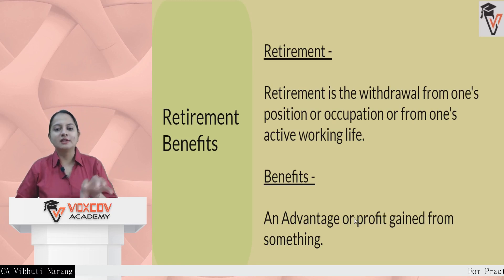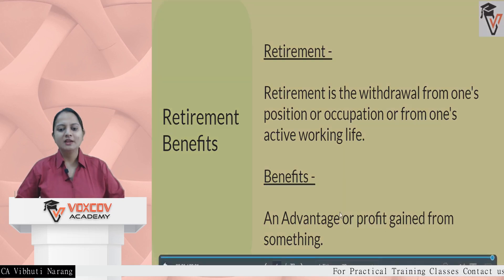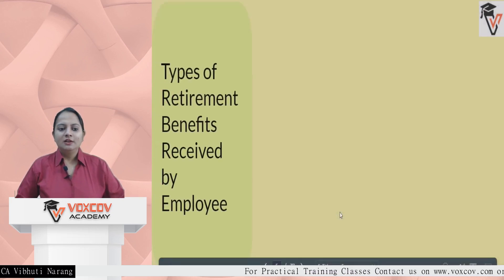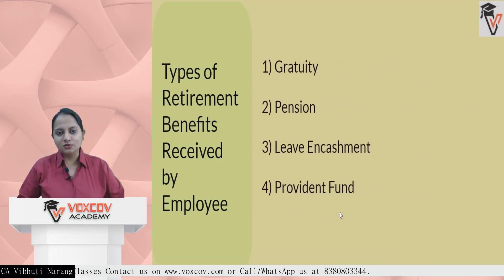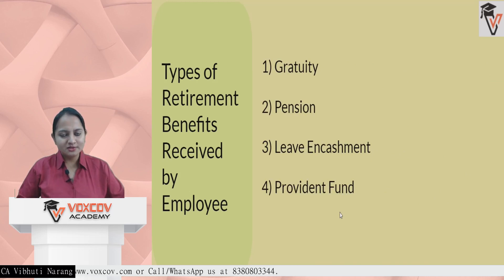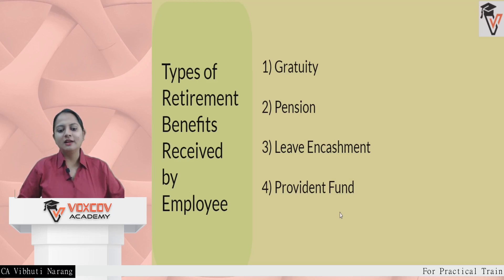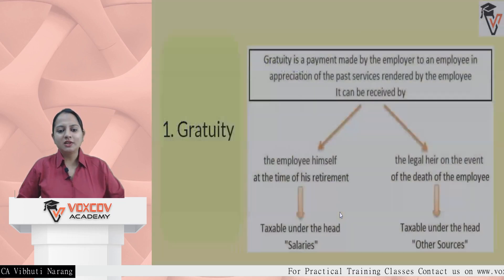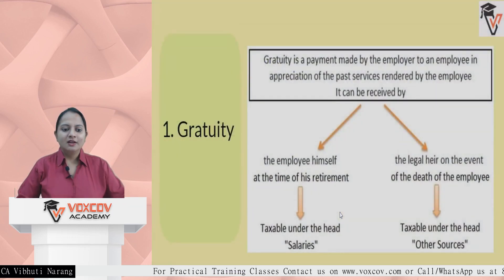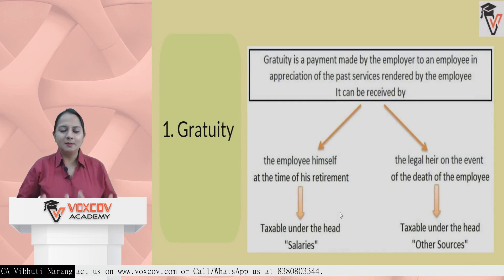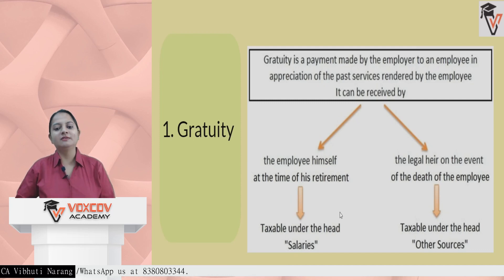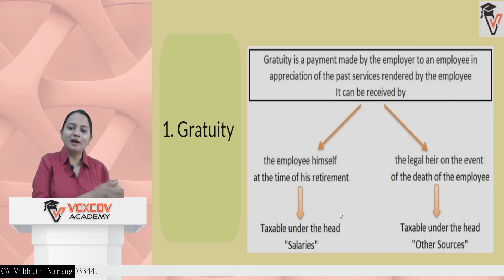Under the Income Tax Act we need to understand the types of retirement benefits given to the employee. The first is gratuity, covered by the Payment of Gratuity Act. The second is pension, covered by the PF Act. Third is leave encashment, for which there is no specific act governing it. The last is provident fund. Each of these is an appreciation — a benefit given to the employee for past services rendered.